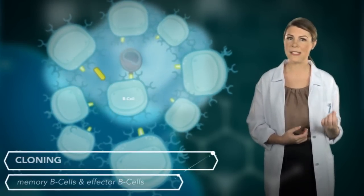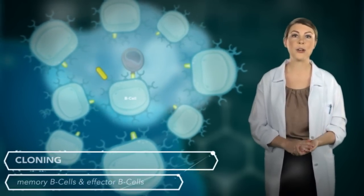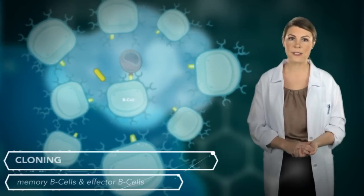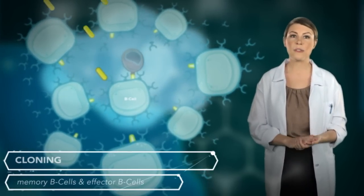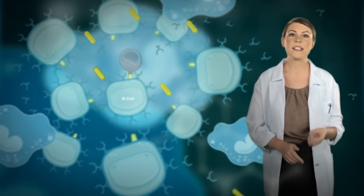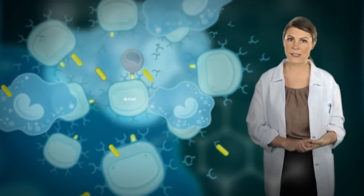Activated B cells clone themselves, producing memory B cells, which can carry information on particular antigens for years, and effector B cells that produce more free-floating antibodies that tag pathogens and draw phagocytes to them.